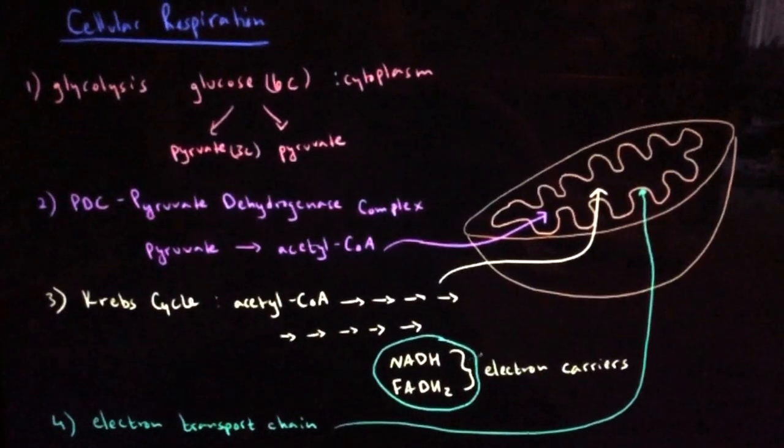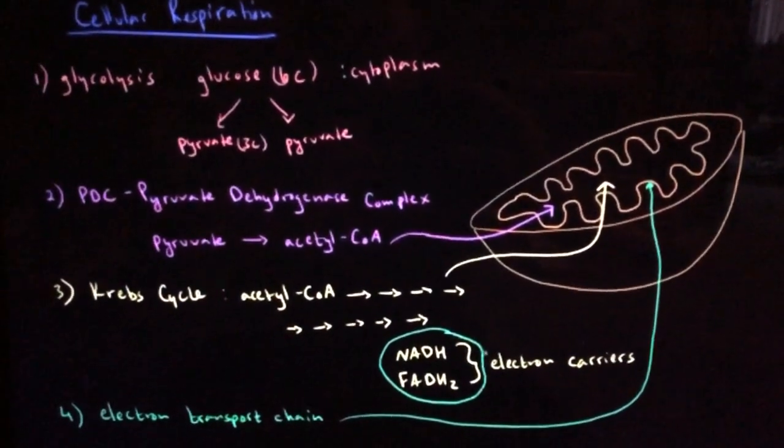So let's take a closer look at the inner mitochondrial membrane and see what happens during the electron transport chain. So here's a more close-up diagram of the inner mitochondrial membrane.